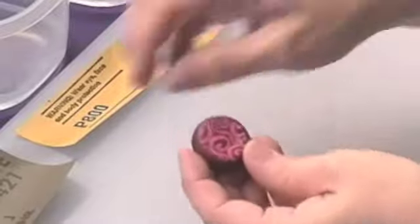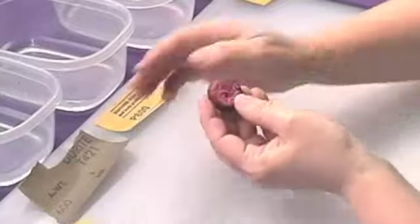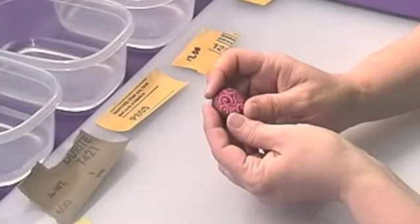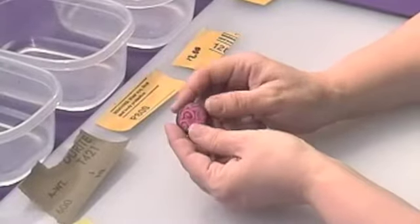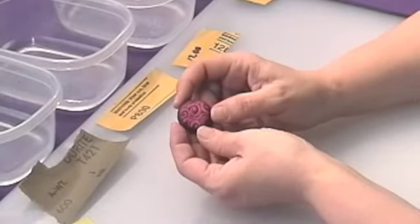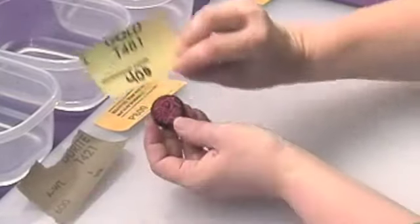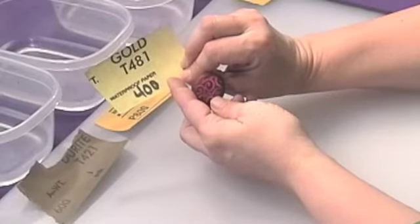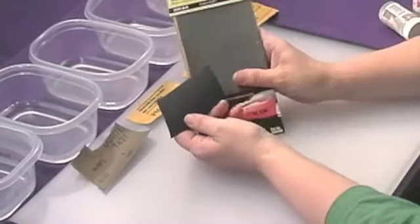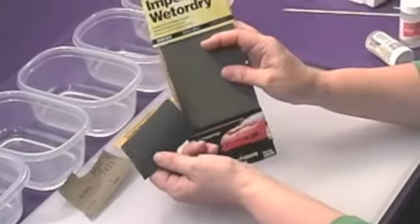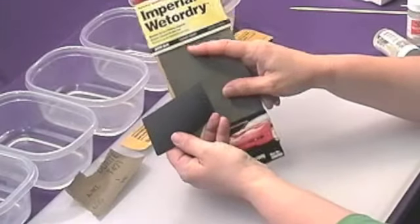And you will want to invest in several grits of sandpaper. Usually if you've got a lot of major work to do, you could go down to like a 300 to actually reshape a bead, but in general that's going to scratch up your clay. So you don't really want to start that coarse. A 400 is a good number to start at. You want to get wet, dry sandpaper. And you want it starting at 400 and going up, you can go up as high as 2000 grit. Usually you'll have to get these in an auto supply store.